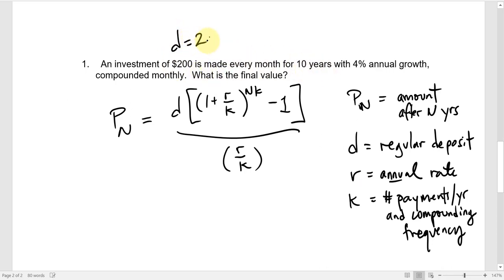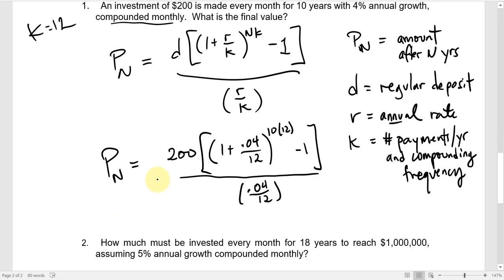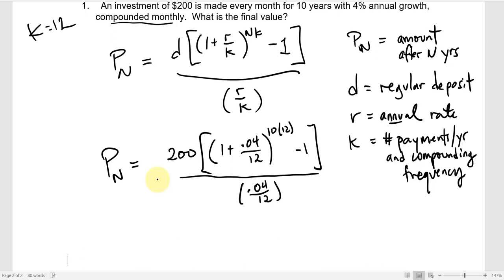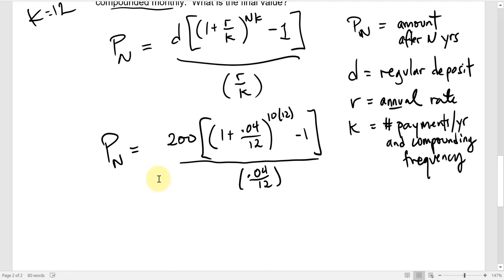D is 200, N equals 10, R is 0.04, and K is equal to 12 since it's compounded monthly. The value we don't know is the future amount — exactly what it's asking for. You could type it all in at once in the calculator, but there are a lot of grouping symbols and it is possible to mess up. It would be a shame to mess up if you completely understood everything and then just typed it in wrong.